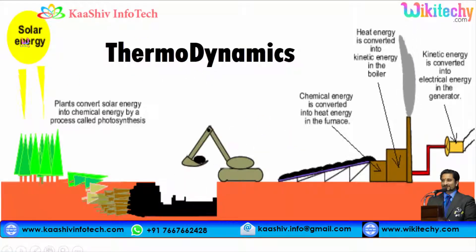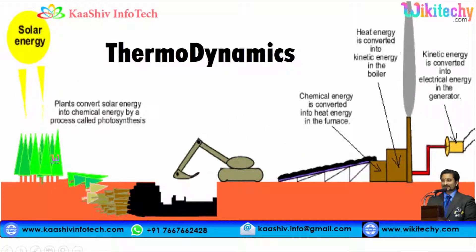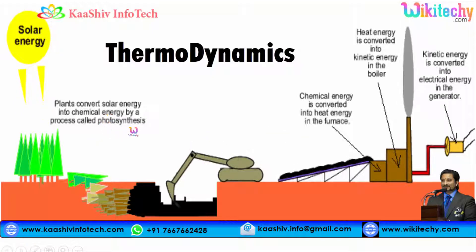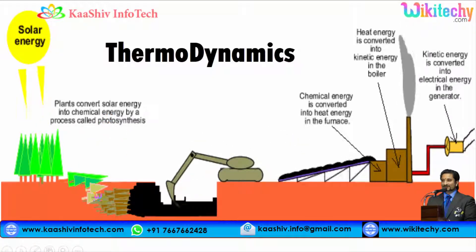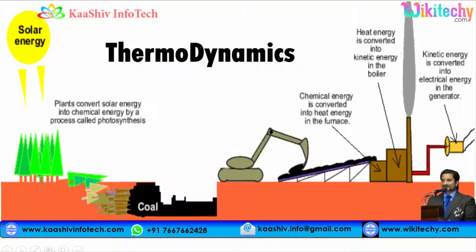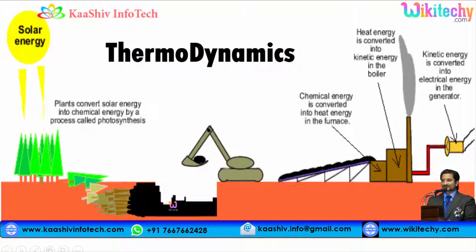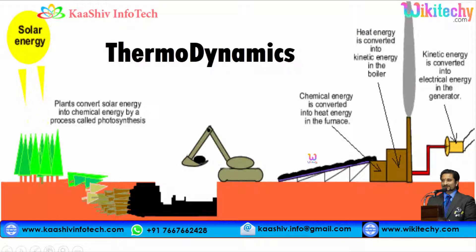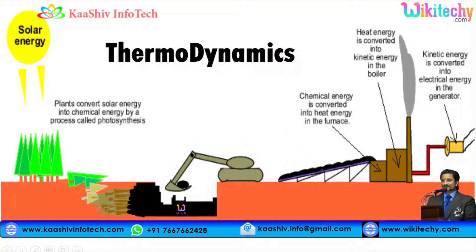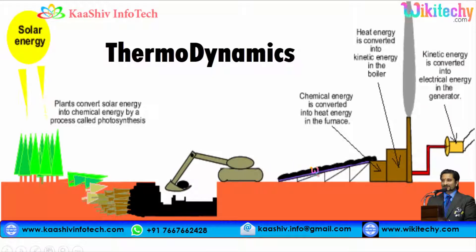Solar energy is coming and it is used by the plants. It is converted into chemical energy via the process called photosynthesis. The plants died and got decomposed. The decomposed plants have become coal, and this coal is used here — it becomes chemical energy, which is converted into heat energy in the furnace.